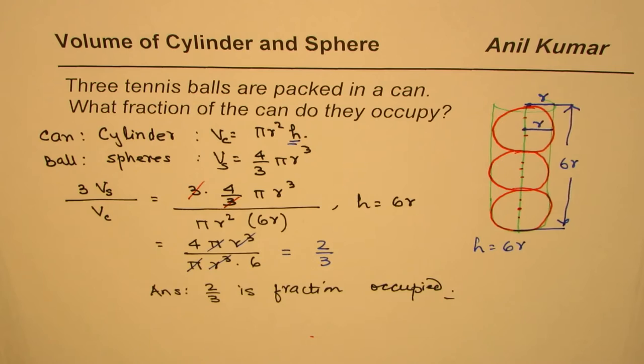So that is how you can actually answer it. First, remember your formulas: volume for the cylinder is πr²h, and for a sphere it is 4/3 πr³.